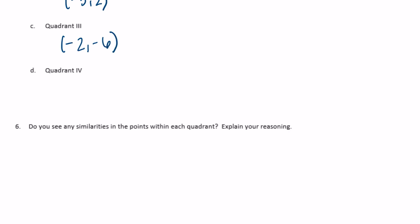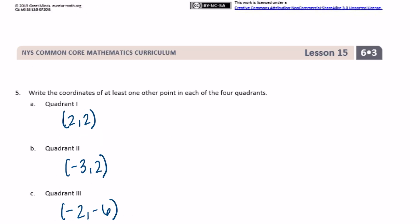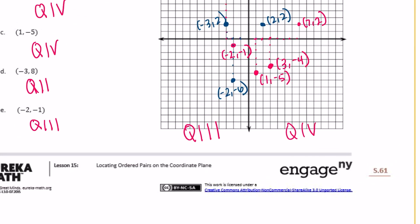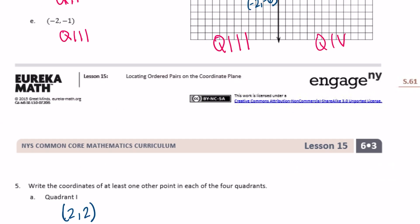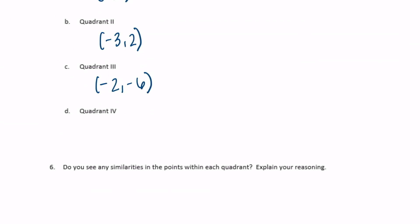And for quadrant 4, let's plot (6, -1) — x is positive, y is negative.